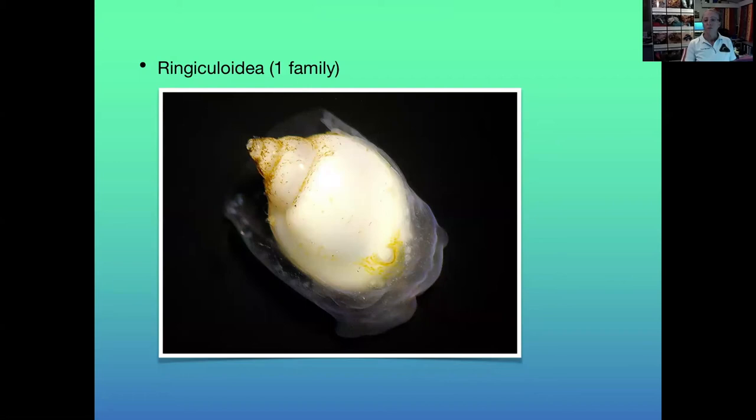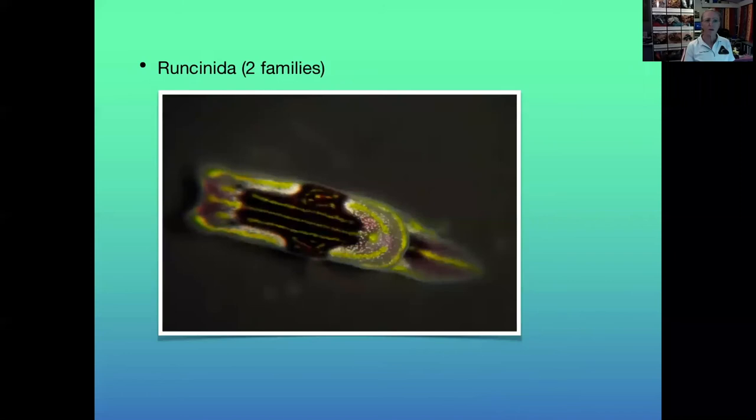The Runcinacea are considered the most primitive of sea slugs, related more closely to slugs from ancient eras. They also burrow through the silt and substrate and feed on foraminiferans and copepods.